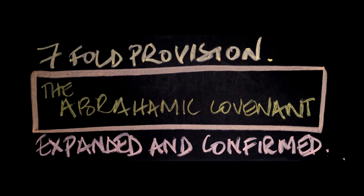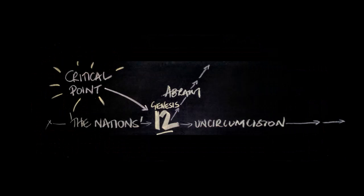There's a notion out there called Covenant Theology. Covenant Theology is everything in opposition to what we're going to cover in this Bible Timeline, and this is where the problem starts with Covenant Theology — right here in Genesis 12.